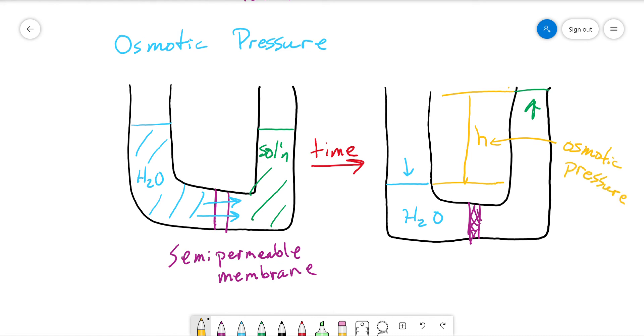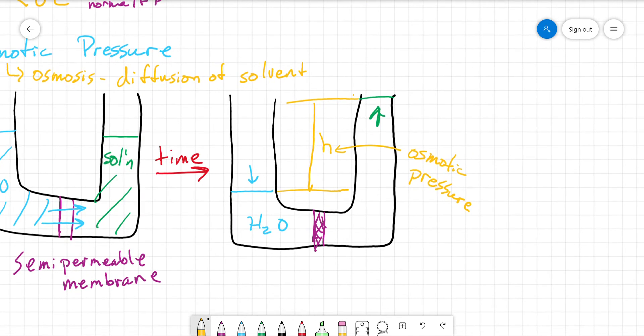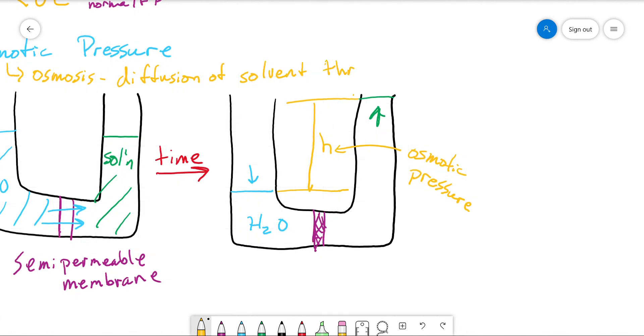Where we get the pressure thing from: we have a column here, that height difference is our osmotic pressure. I should say that osmosis is—I always forget you guys don't know everything—osmosis is the diffusion of solvent through a semi-permeable membrane.